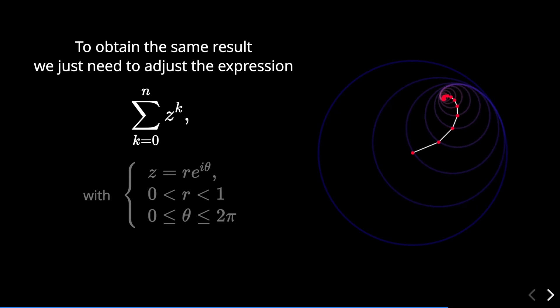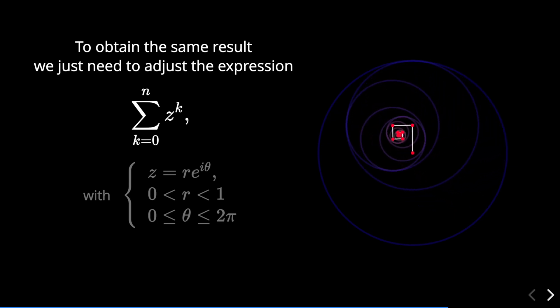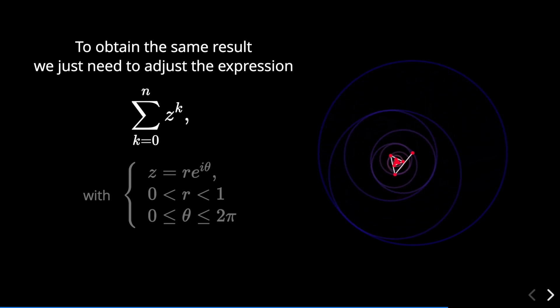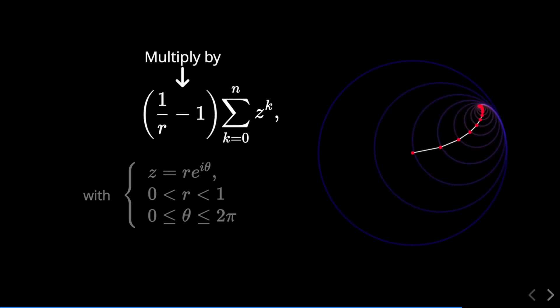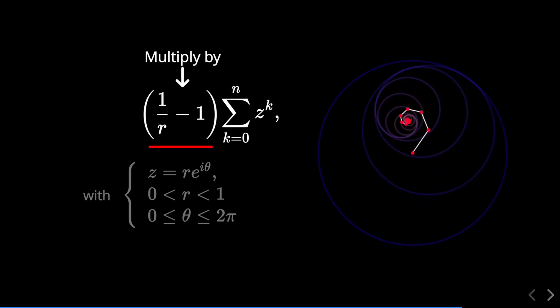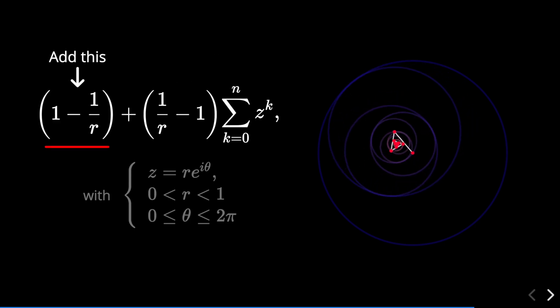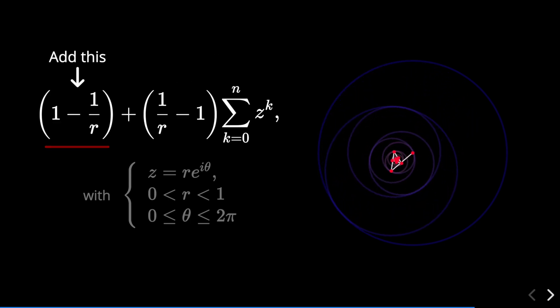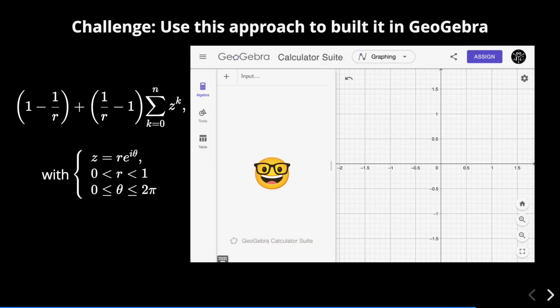Of course, using directly the geometric series won't reproduce the same result, we just need to adjust it. First, multiply by the factor 1 over R minus 1 and add the term 1 minus 1 over R. As a little challenge, try to build the animation in GeoGebra using this approach. That is, considering set a complex number equal to R exponential i theta, where R is greater than 0 and less than 1, and theta is between 0 and 2 pi. If you get stuck, don't worry, I will add links in the description with the solution.